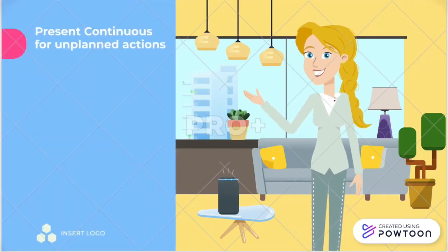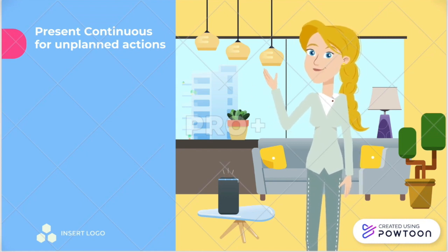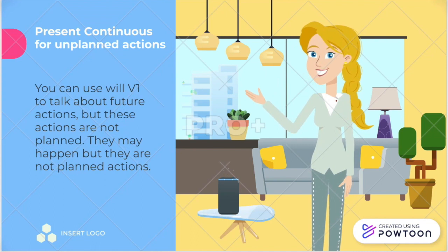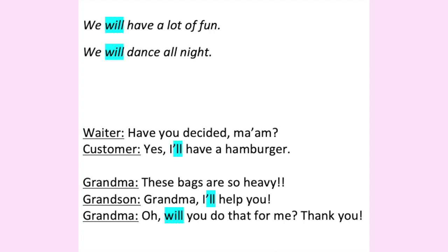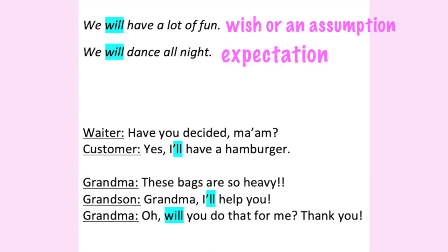What about unplanned actions? You can use will plus verb one to talk about future actions, but these actions are not planned — they may happen, but they are not planned actions. The future with will is used for a number of situations: we use it for predictions, assumptions, or expectations. We will have a lot of fun — this is not a plan, but a wish or an assumption. Similarly, it will be delicious is a guess about the future — these cannot be plans. Or, we will dance all night — this is an expectation rather than a plan.